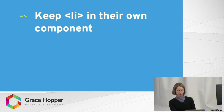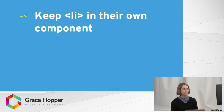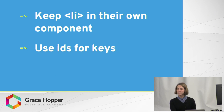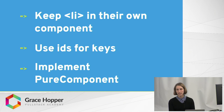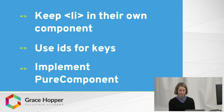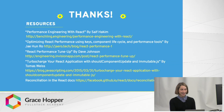To recap: when rendering a big list in React, keep the list items as their own component. Use IDs for keys. If you're not re-ordering your collection, using indexes isn't a big deal, but IDs will help you avoid performance issues altogether. Implement pure components if you're seeing a lot of wasted time on re-renders. Here's some further reading — thank you for listening.